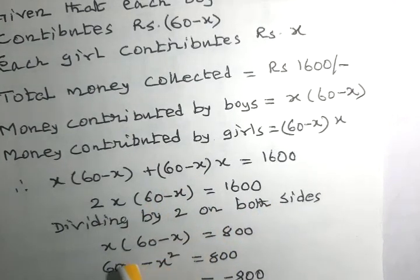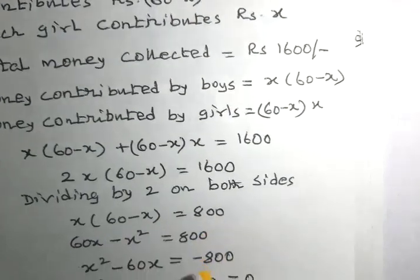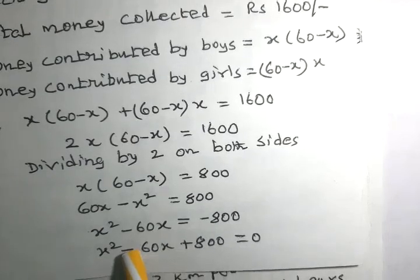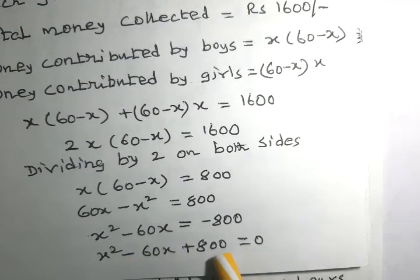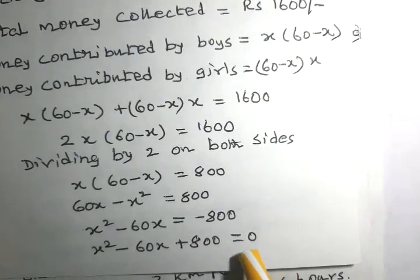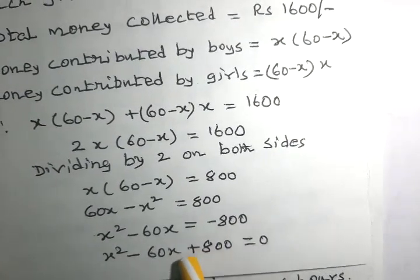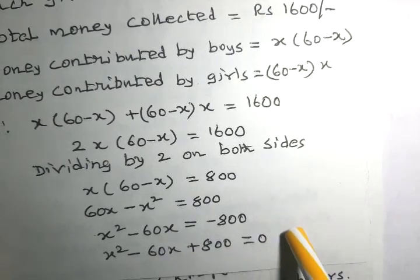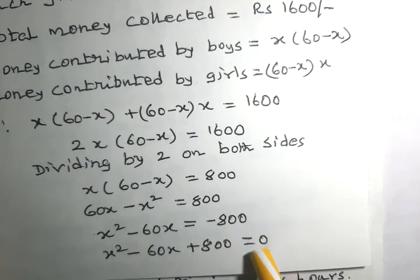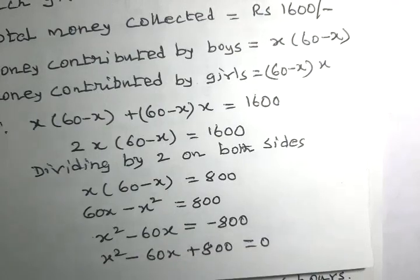Dividing by 2, we get x times 60 minus x equals 800. After simplification we get the quadratic equation x squared minus 60x plus 800 equals 0. This can be solved by the factorization method, the quadratic formula, or completing the square method.